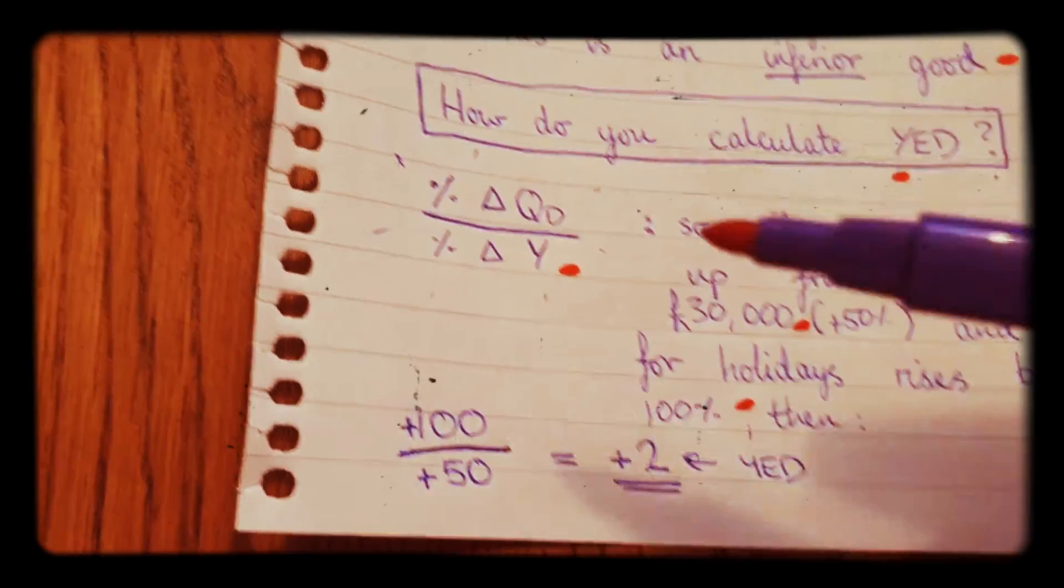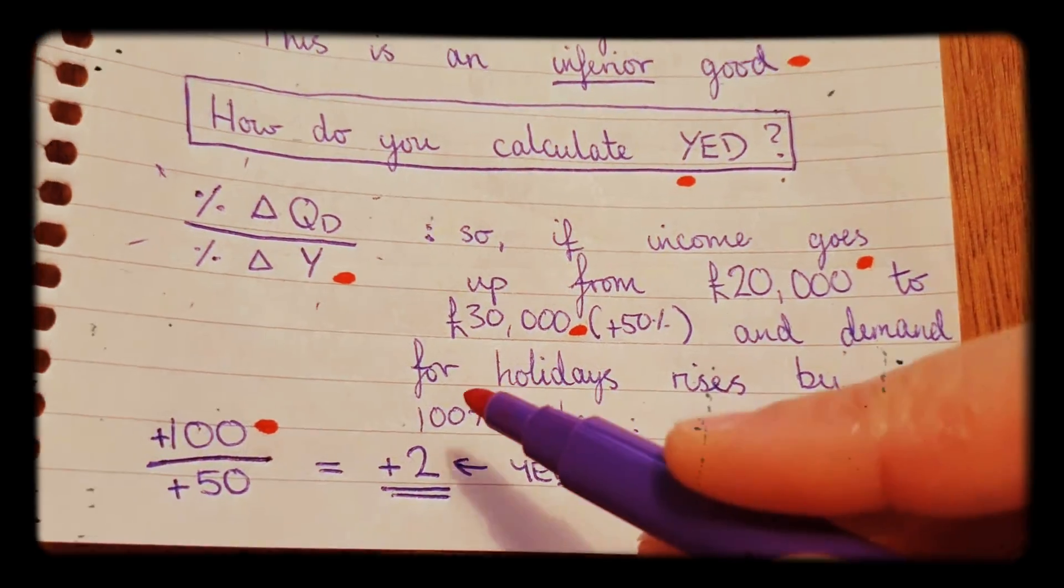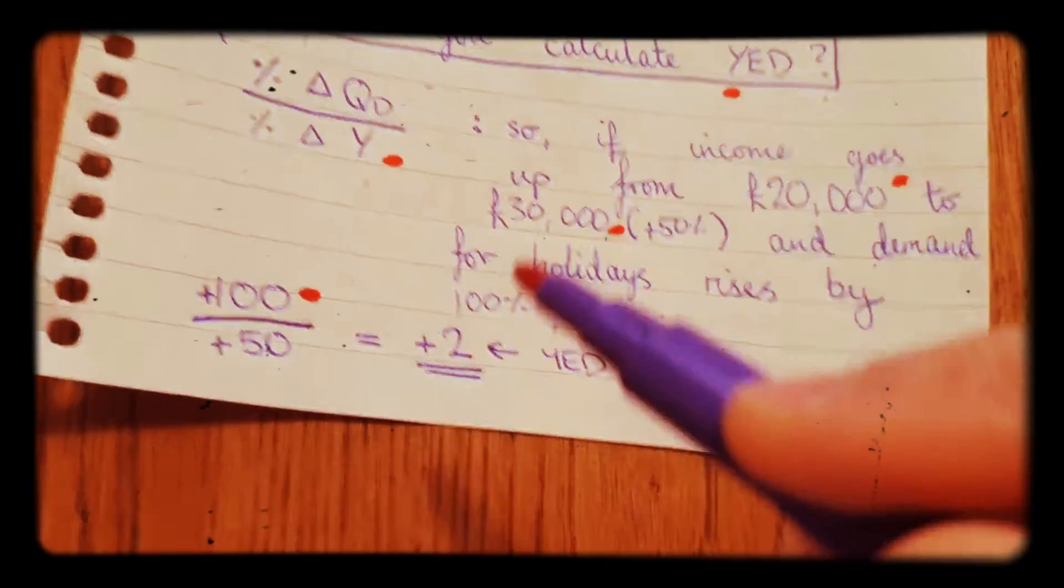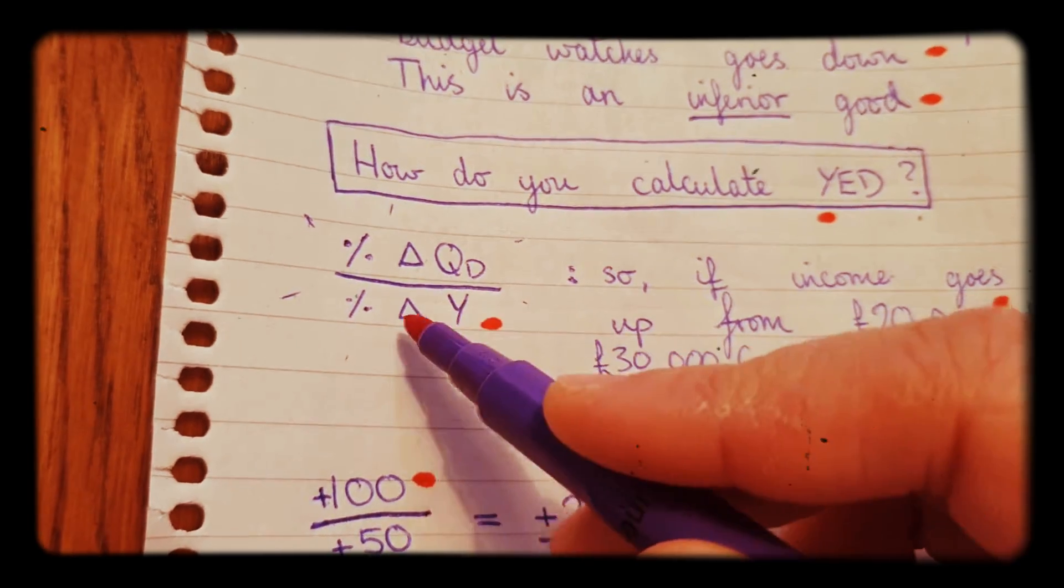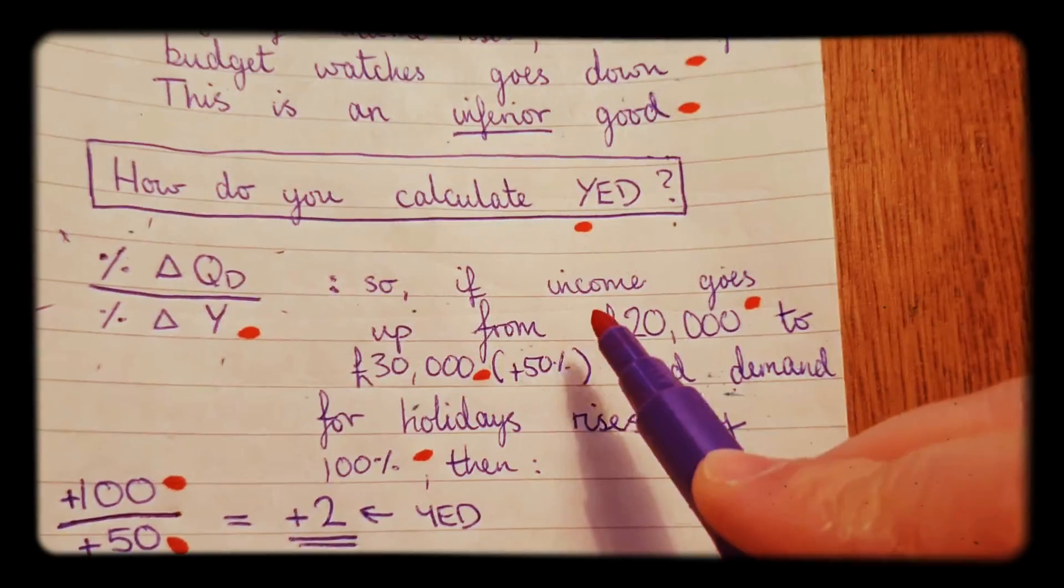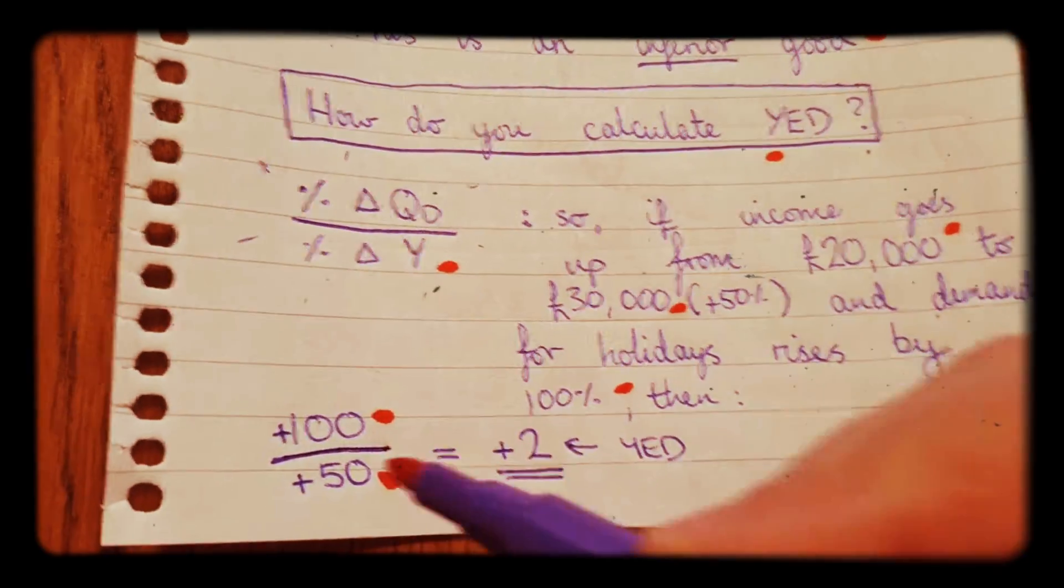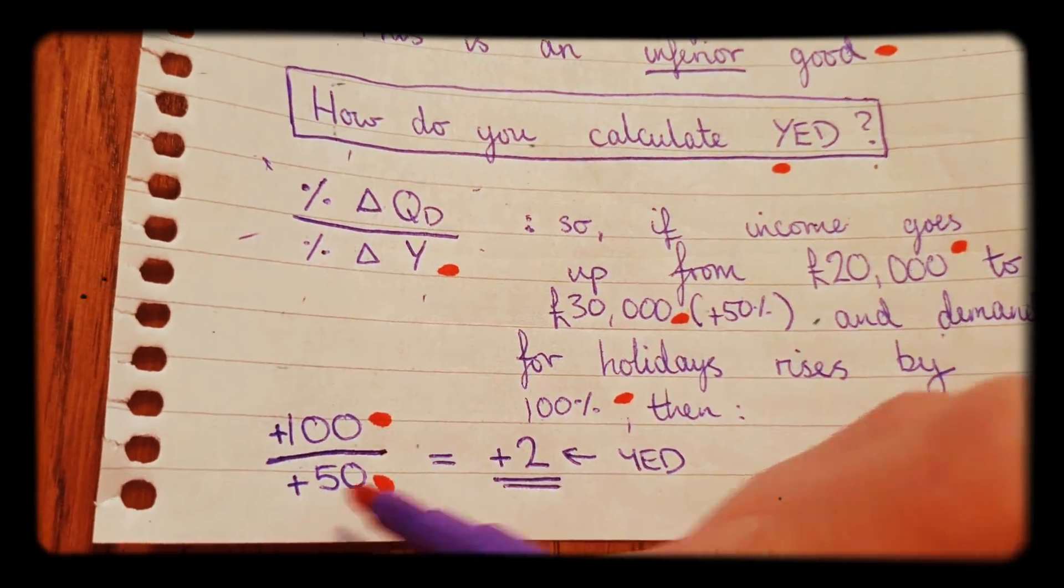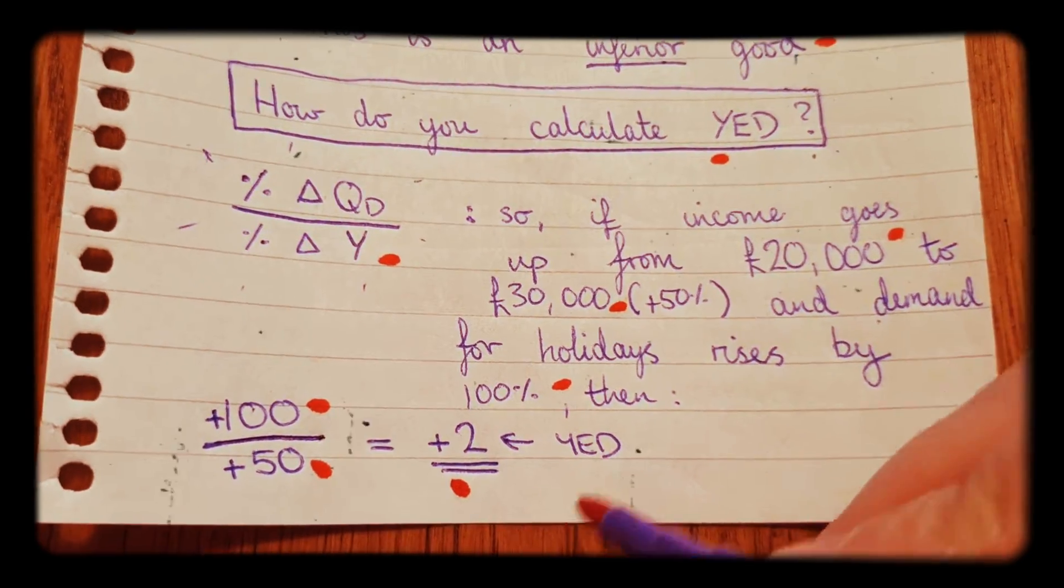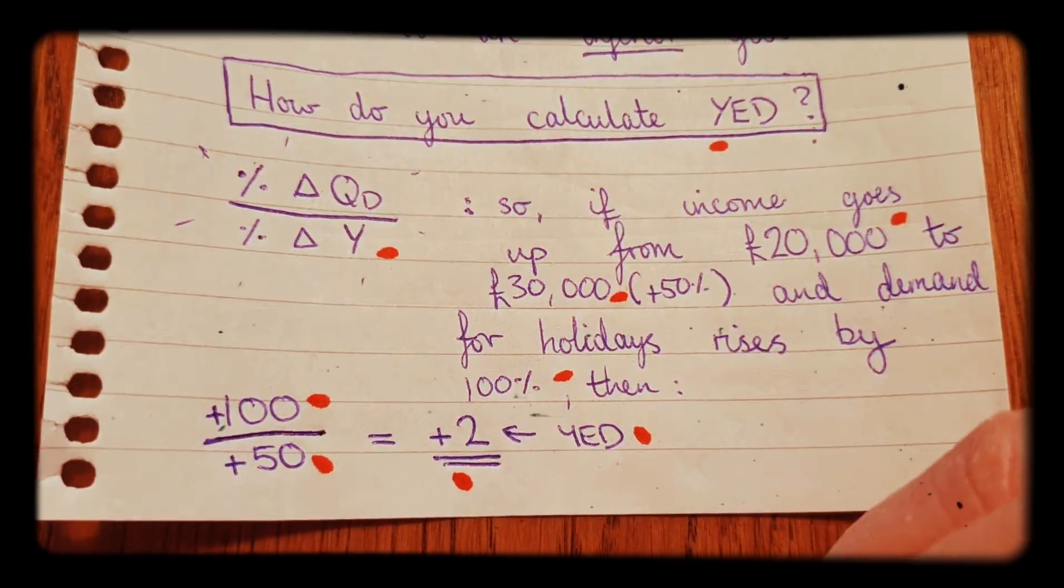You would have 100 at the top, plus 100, because the quantity demanded has gone up by 100%. And then we would have the income percentage change in income, plus 50 at the bottom, because income has gone up from 20,000 to 30,000. As a result, positive 100 over positive 50 makes positive 2, and that's our YED. The positive 2 is our YED calculation.